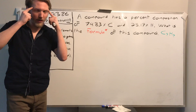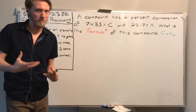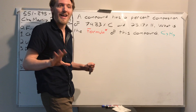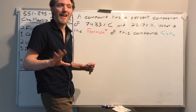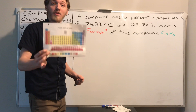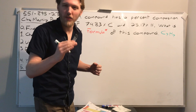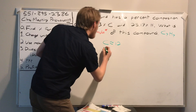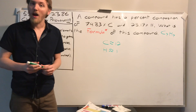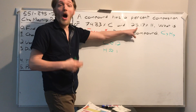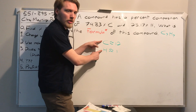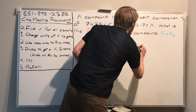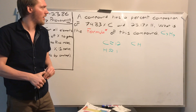Before we start calculating, let's conceptualize what this means. I have a compound that's 75% carbon and 25% hydrogen. Look at your periodic table: carbon's mass is about 12 atomic mass units, hydrogen's is about 1. Even though hydrogen weighs much less, it's contributing up to 25% of the mass. The simplest example would be CH — one carbon and one hydrogen.